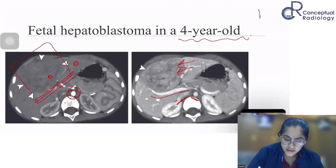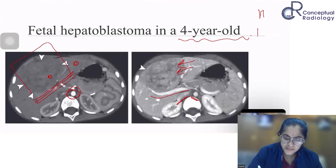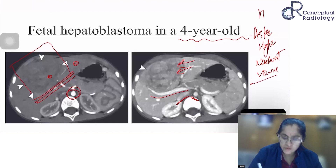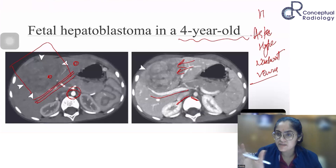The characteristic enhancement findings in hepatoblastoma are arterial phase hyperenhancement and washout on the venous phase. This is also the classical imaging pattern of HCC, so there is a similarity between hepatoblastoma and HCC, though there are also obvious differences between them.